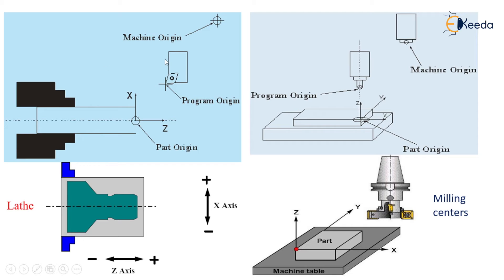In CNC, if you observe, there is a machine origin set by the machine tool builder. The program origin is defined with respect to this machine origin. Here the machine origin is where all the tools and machines are kept at one position, or it can be set at a different location in CNC lathe or milling.